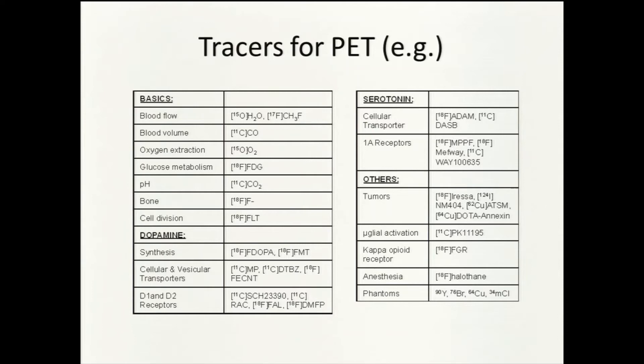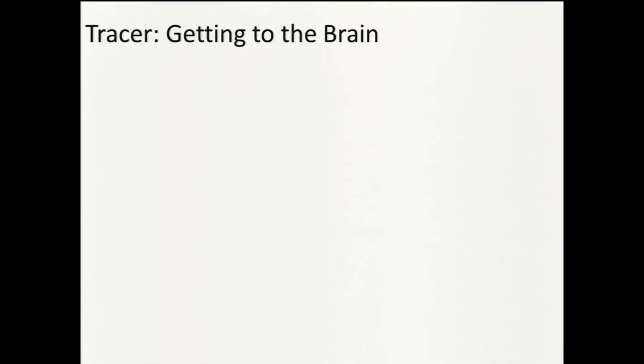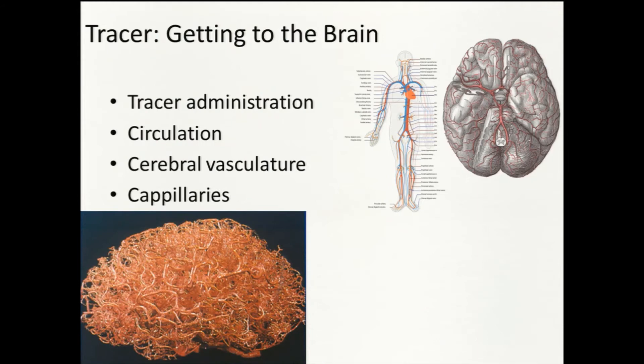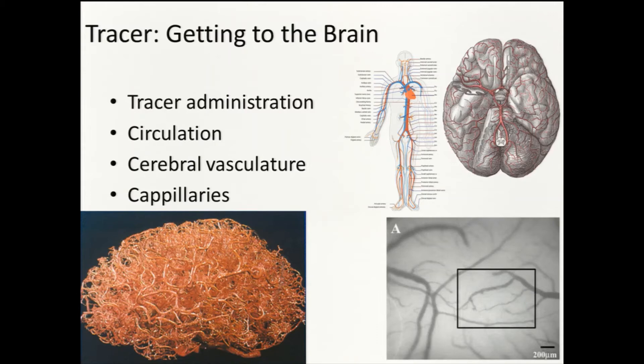When imaging the whole brain noninvasively, we need to get the tracer to the brain. It's typically administered intravenously, moves through the circulation into the cerebral vasculature, and into the capillaries where it transfers into tissue. A good tracer will cross the blood-brain barrier into tissue — a challenge for the chemists. Also, when that tracer is metabolized, for instance in the liver, for a good tracer those metabolites will not cross the blood-brain barrier into the brain.